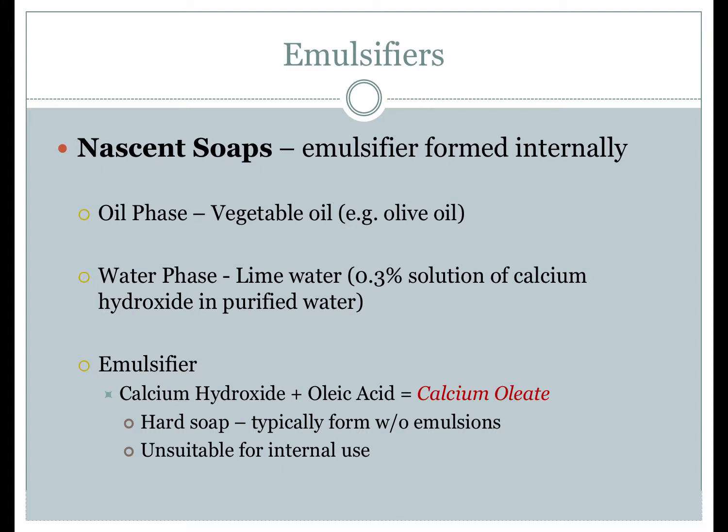Olive oil may be replaced by other vegetable oils, but you may need to add extra free fatty acid in the form of oleic acid drops. The water phase used is lime water — a 0.3% solution of calcium hydroxide in purified water. Lime water is actually a supersaturated solution; only the supernatant clear liquid should be used, allowing the excess calcium hydroxide to settle. When olive oil is mixed vigorously with lime water, calcium hydroxide reacts with oleic acid to form calcium oleate, an emulsifying agent. Calcium oleate is a hard soap which forms a water-in-oil emulsion.